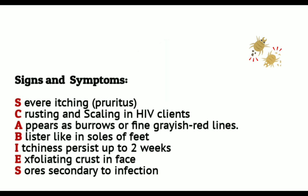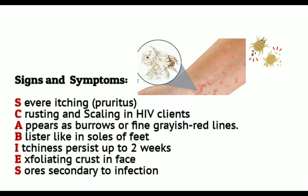For letter B — blister-like lesions on soles of feet and pimple-like lesions in trunks. Blister-like lesions on soles of feet are common in infants and very young children, but not usually in adults and older children. In adults, burrows are commonly found between the fingers, in the skin folds of the wrist, the elbow or knee, and in the genitalia of the infected person.